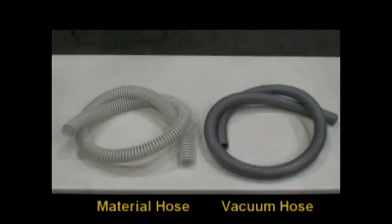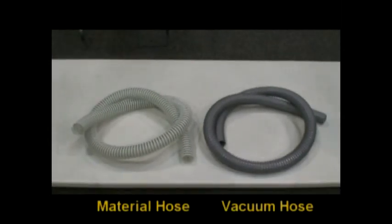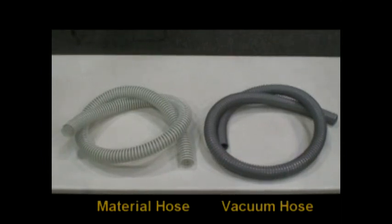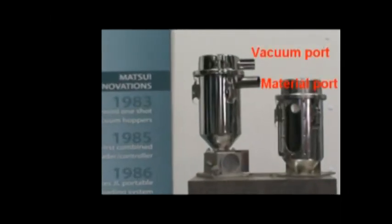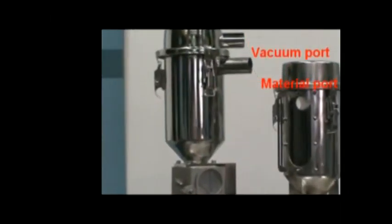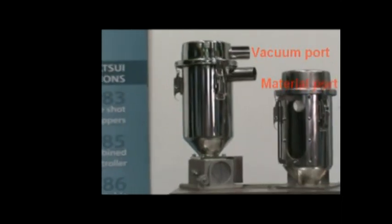Matsui supplies a 15-foot length for each direction, for both vacuum and material. The provided gray hose is for vacuum, while the white hose is for the material. The vacuum and material ports on the receivers may vary between receiver types, so make sure to realize which end is for each type of hose.